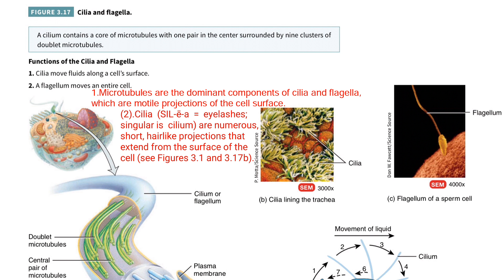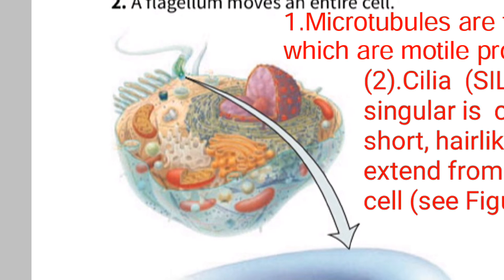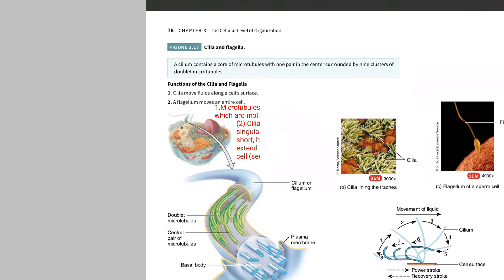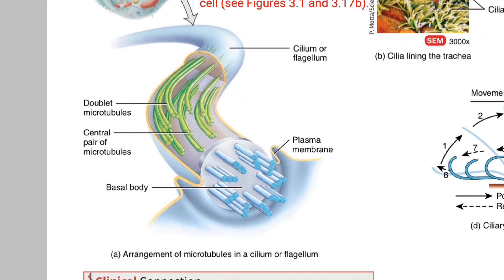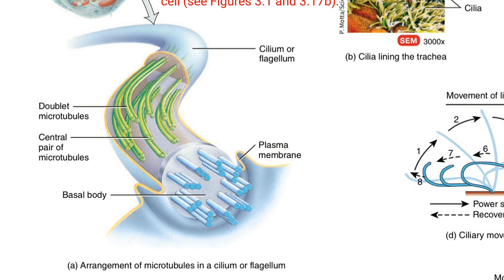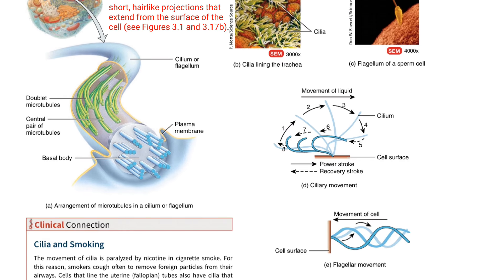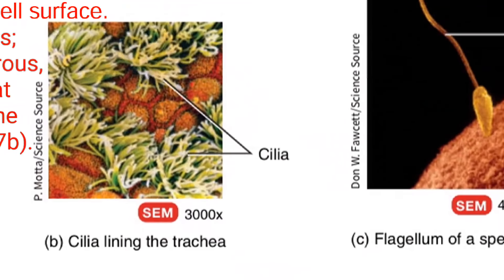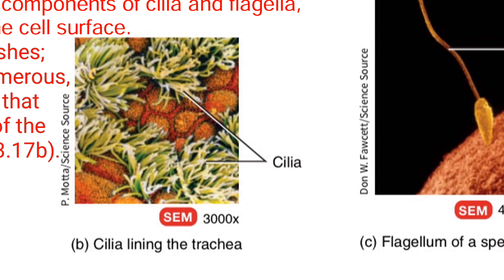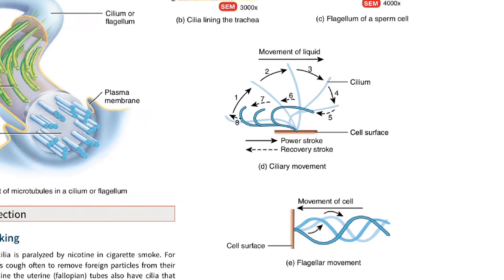Before we start, I would like to show you this figure showing both cilia and flagella. One animal cell is shown with one cilium on the surface. In the structure of the cilium you can see how the microtubules are arranged. In the respiratory tract — in the trachea — cilia are present on the surface of the cell.